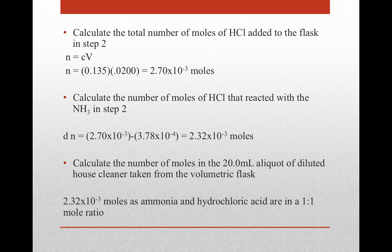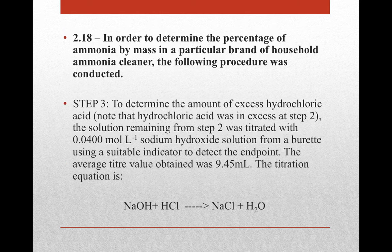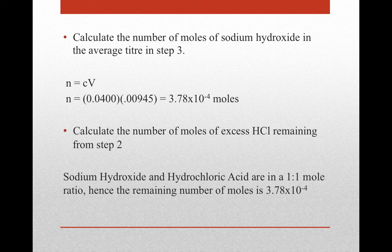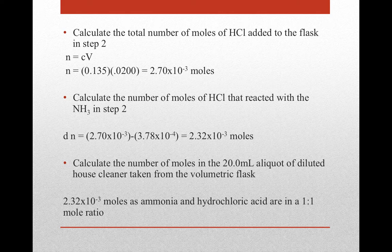From this we can calculate the moles of NH3 in the 20 millilitre aliquot of diluted household cleaner. It equals the moles of HCl that reacted in step 2, because looking at the balanced chemical equation for step 2, ammonia and HCl have a stoichiometric coefficient of 1 — a 1:1 mole ratio. So the moles of NH3 in the aliquot is 2.32 × 10⁻³ moles.